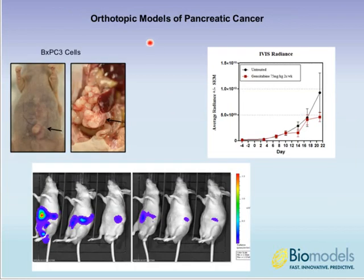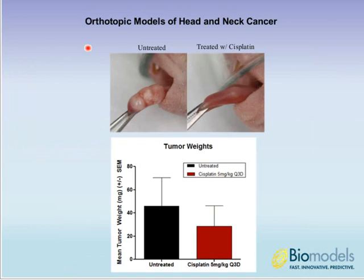For pancreatic cancer, BXPC3 cells — which stably express luciferase — are injected directly into the pancreas. This is a very rapid model. We dosed with gemcitabine as a positive control, and while we would have liked a stronger effect, differences between treatment groups are still illustrated using IVIS imaging. For head and neck cancer, SCC25 cells are injected directly into the tongue of animals and treated with cisplatin. In a more clinically relevant setting, cisplatin would be combined with radiation therapy — a study currently underway at BioModels using in-house SCC25 cells stably expressing luciferase.